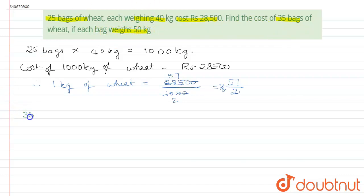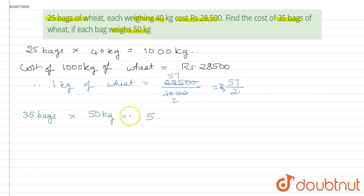Next, we find the cost of 35 bags each weighing 50 kg. Total weight = 35 × 50 = 1,750 kg.